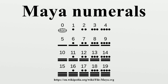Adding and subtracting numbers below 20 using Maya numerals is very simple. Addition is performed by combining the numeric symbols at each level. If five or more dots result from the combination, five dots are removed and replaced by a bar. If four or more bars result, four bars are removed and a dot is added to the next higher row. Similarly with subtraction, remove the elements of the subtrahend symbol from the minuend symbol.